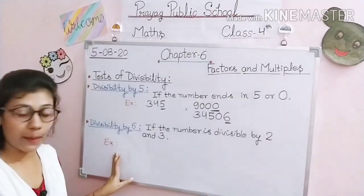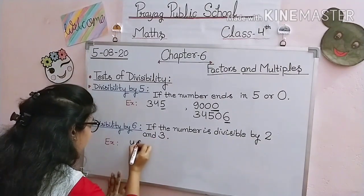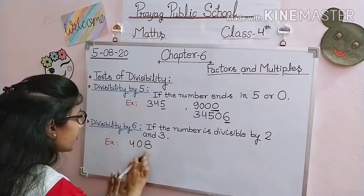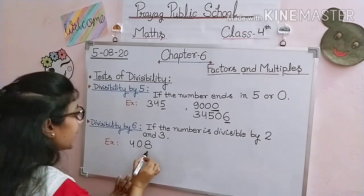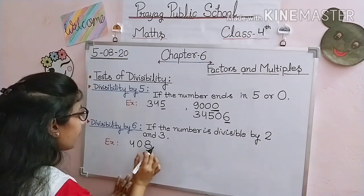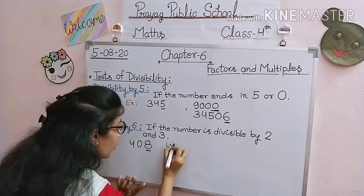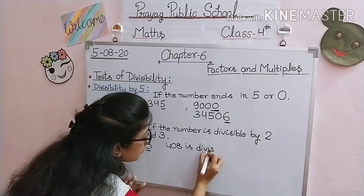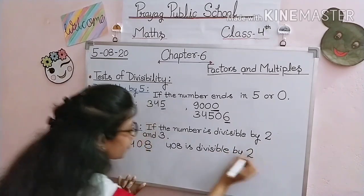Now let's take one example. The number is 408. We check whether the number is divisible by 2. If the unit place has an even number, the number is divisible by 2. The unit place is 8, and 8 is an even number. Therefore, 408 is divisible by 2.